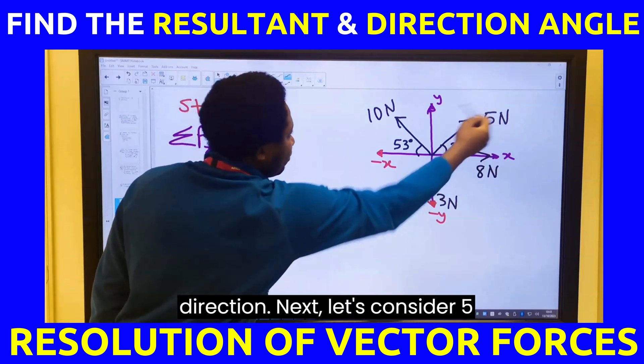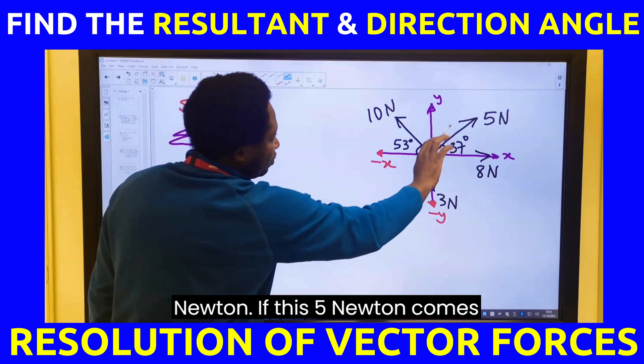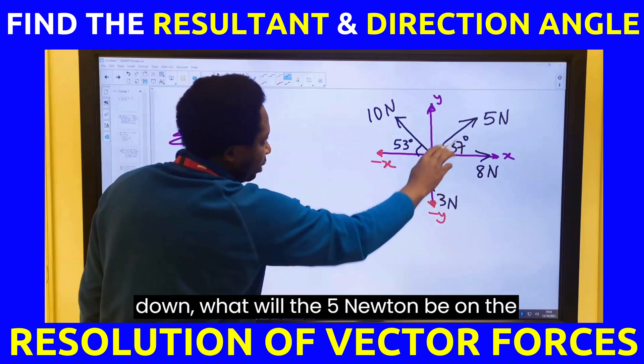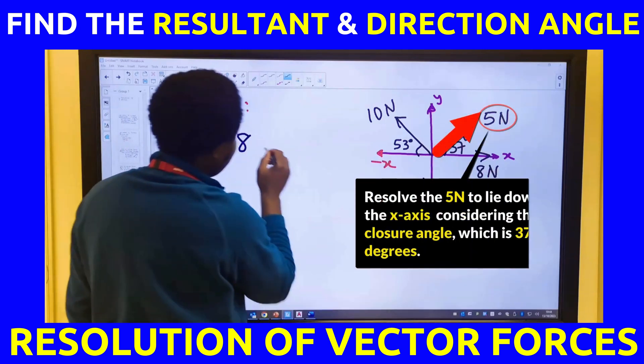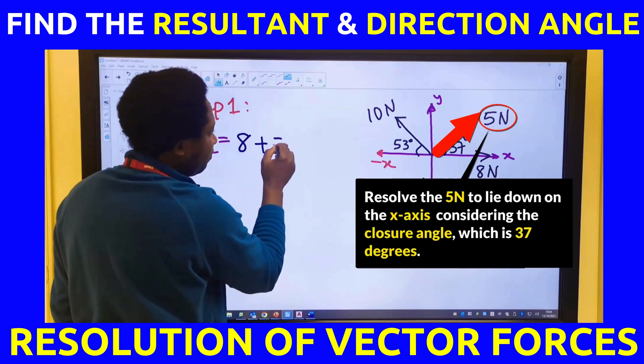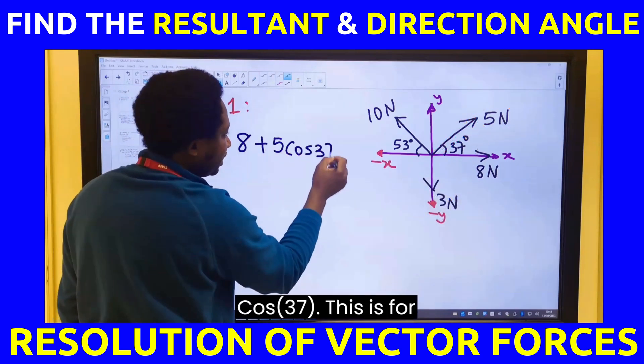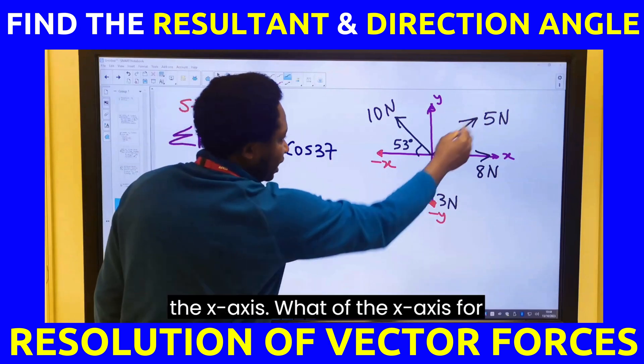Next, let's consider 5 newtons. If this 5 newtons comes down, what will the 5 newtons be on the x-axis? 5 cos 37. This is for the x-axis.